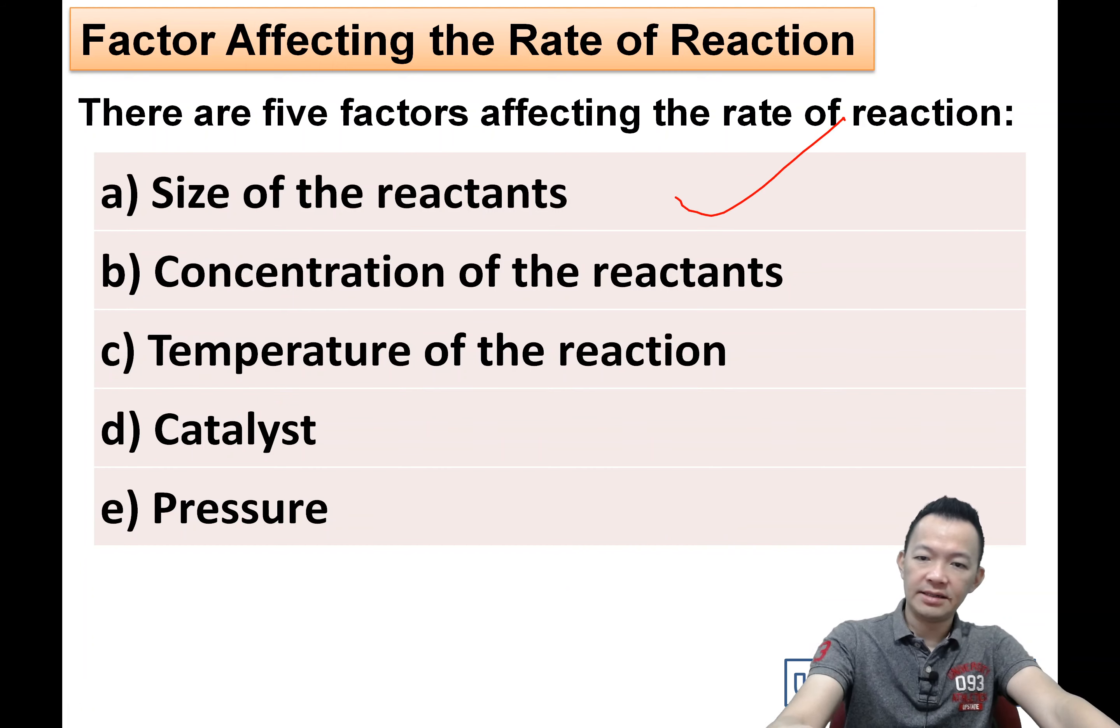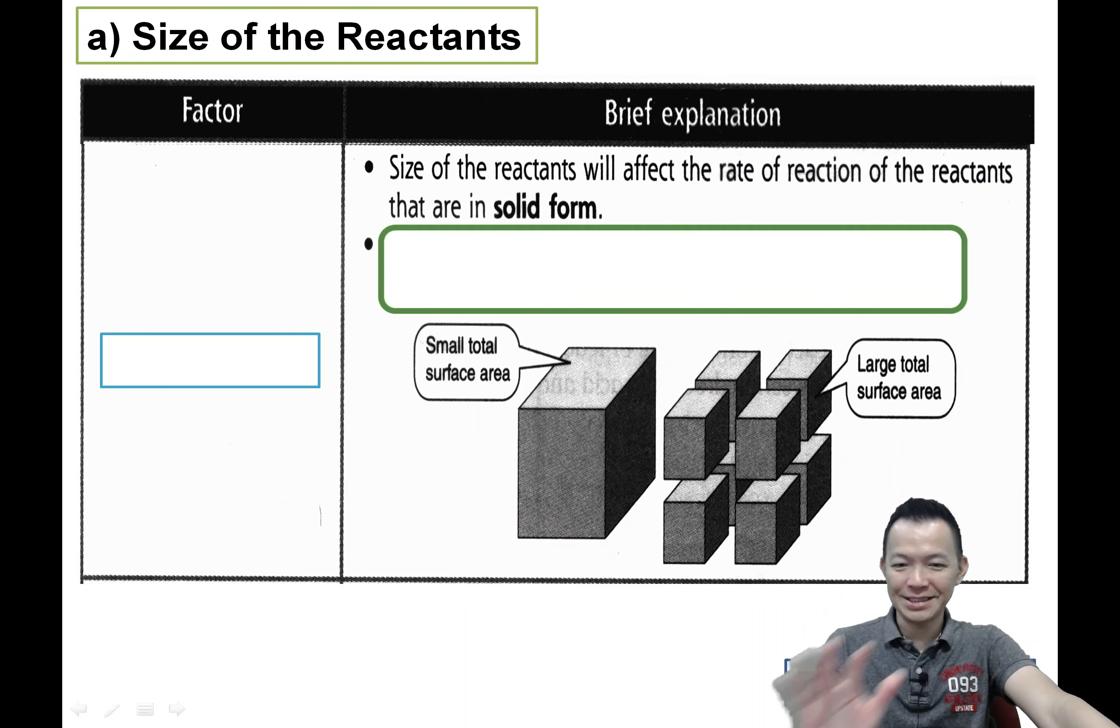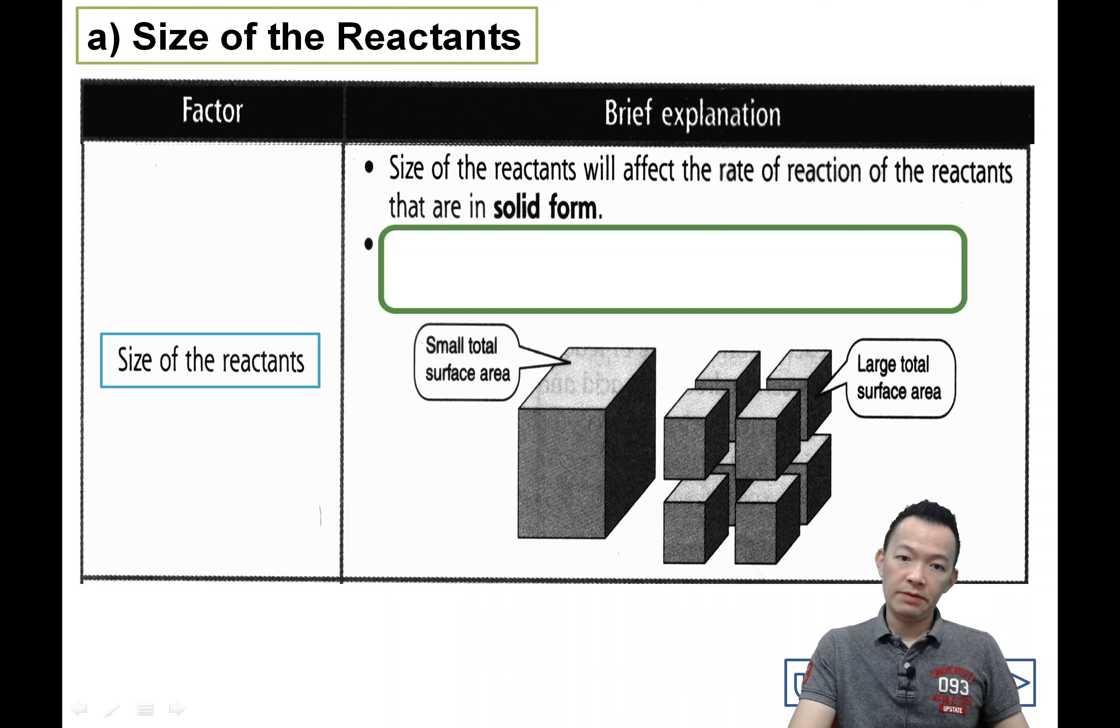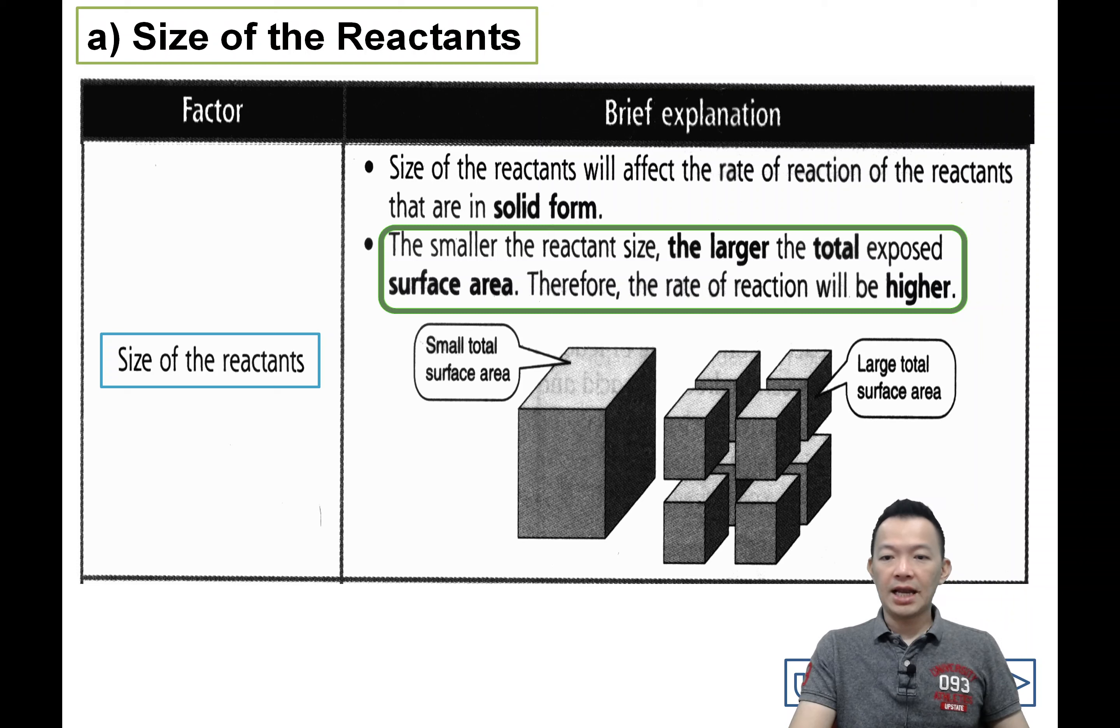So now, we start our first factor, the size of the reactant. So the first factor that affect the real reaction is actually the size of the reactant. In your notes, it will be here. The size of the reactant will affect the real reaction of the reactant that are in solid form. The smaller the reactant size, the larger the total exposed surface area. So therefore, the real reaction will be higher.